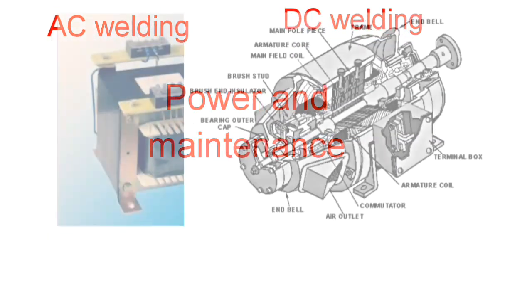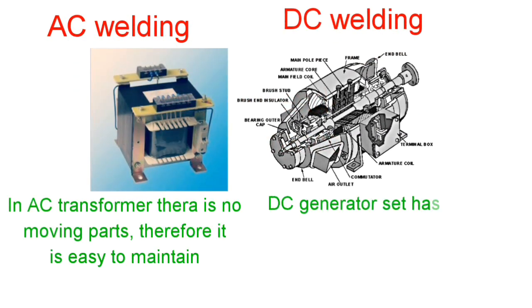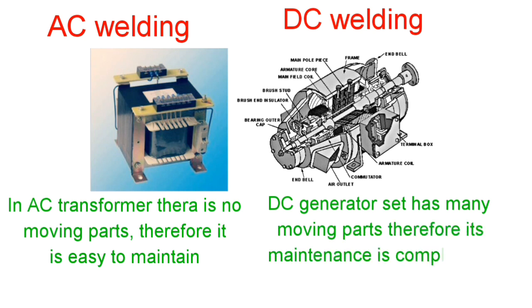Power and Maintenance: In AC welding, the AC transformer has no moving parts, therefore it is easy to maintain. Whereas in DC welding, the DC generator has many moving parts, therefore its maintenance is complicated.